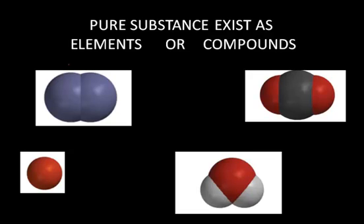All matter can pretty much be broken down into two types: either a mixture or a pure substance. Pure substances can exist either as elements or as compounds. Elements are defined as all the atoms within that sample having the same number of protons, and they are arranged on the periodic table.